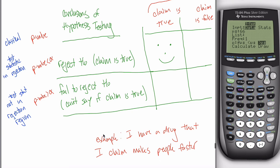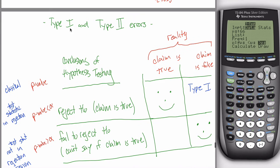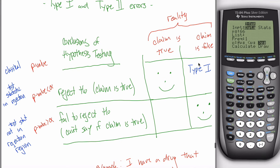But it's possible that the claim is really false and you reject the null hypothesis and say it's true — that's bad; you've come to the wrong conclusion. If you incorrectly reject the null hypothesis, you make what's called a type 1 error. That's a bit misleading, calling it an error, because it sounds like you did something wrong — you, the statistician, didn't do anything wrong. It's just that the data you had led you to the wrong conclusion. You said the claim is true when really the claim is false.